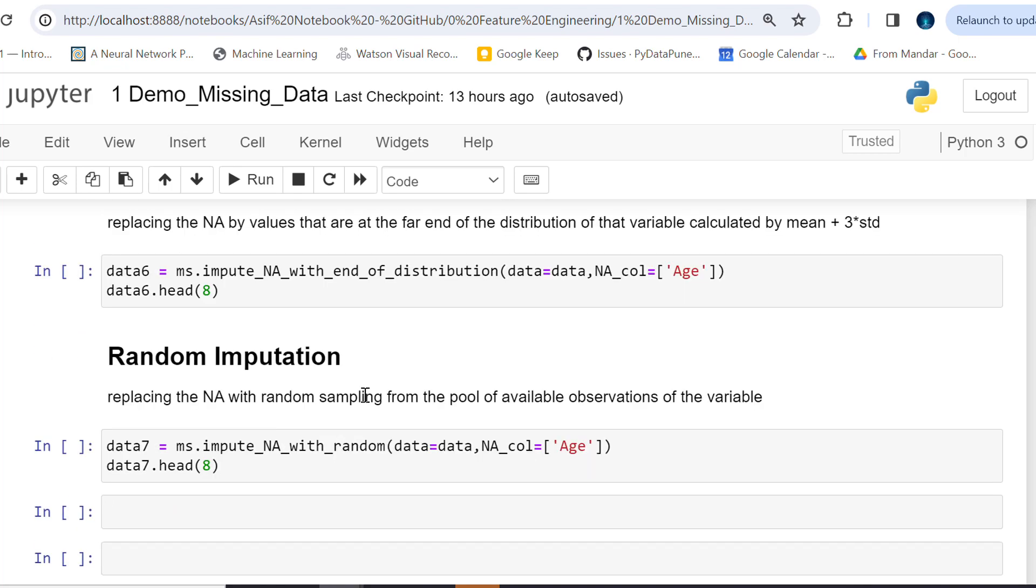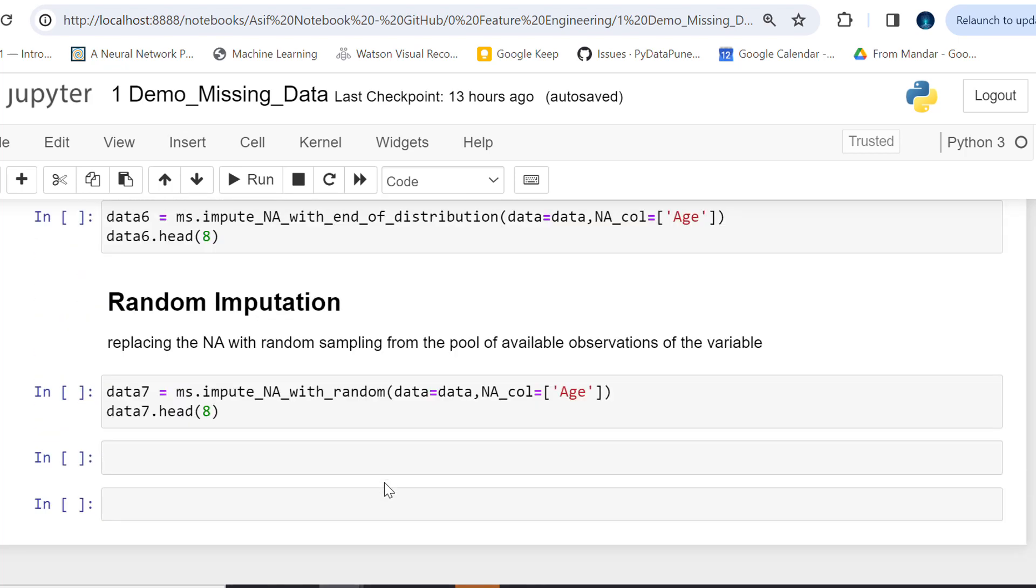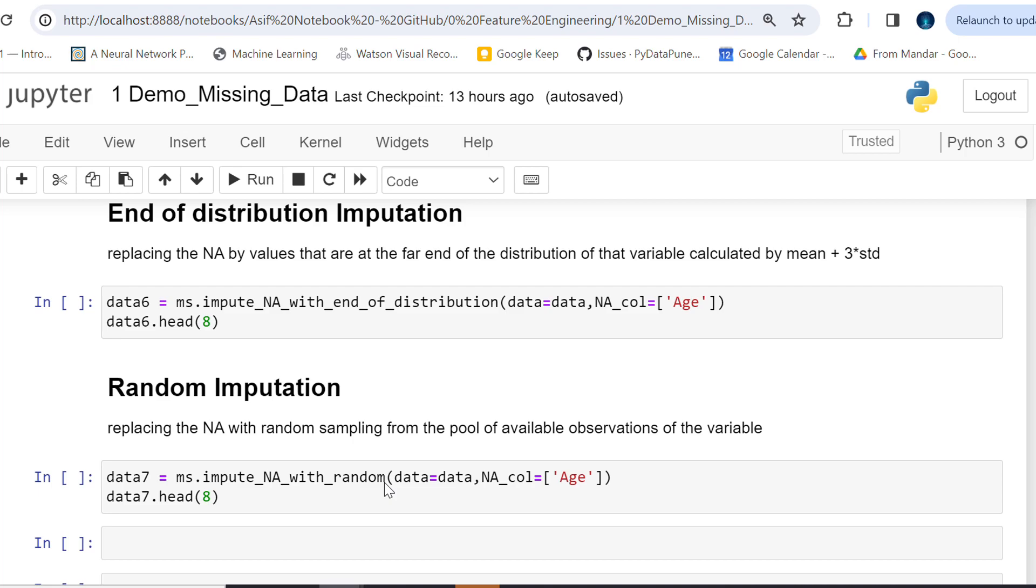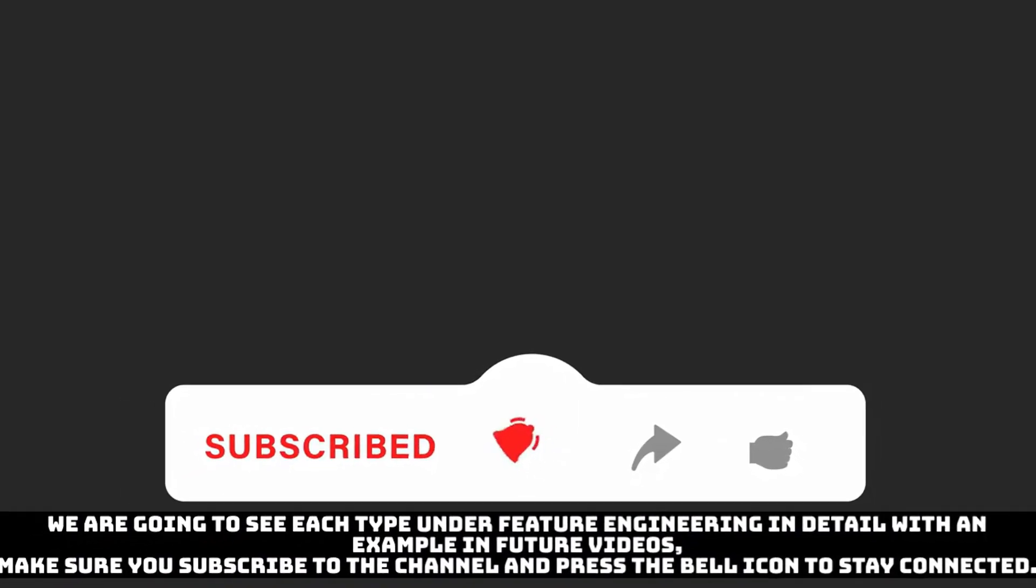Similarly, we can perform many other operations like adding a variable to denote NA, arbitrary value imputation, mean median mode imputation. All of this you can try out on your own. Currently this was just to understand what feature engineering means and how we can handle missing data. In future videos we're going to deep dive and see these feature engineering techniques in detail with specific feature engineering techniques. Make sure you subscribe to our channel and press the bell icon to stay connected.